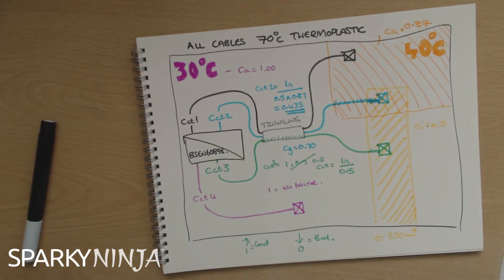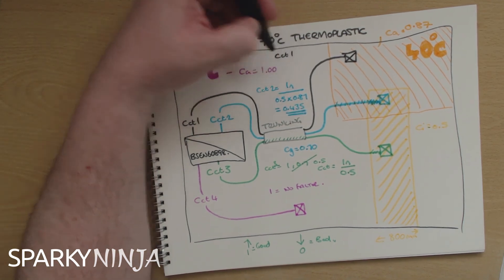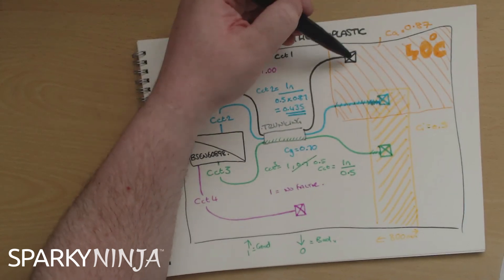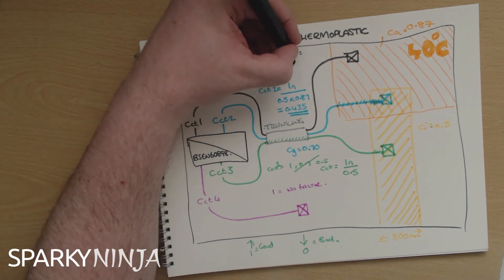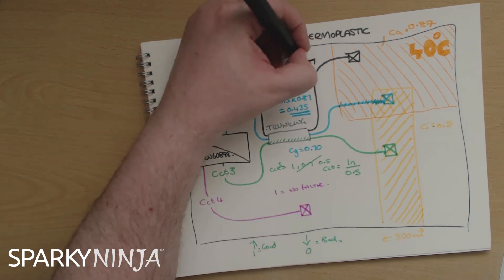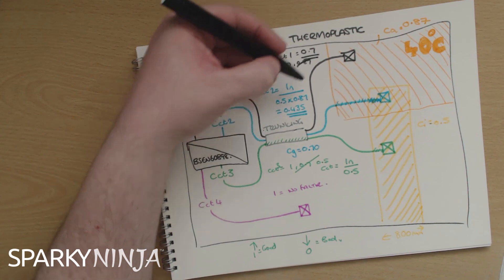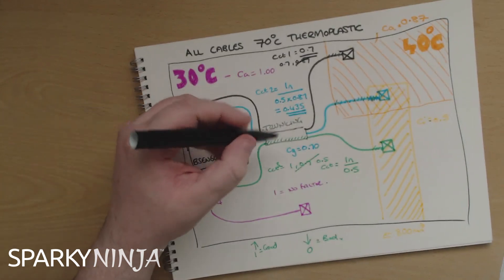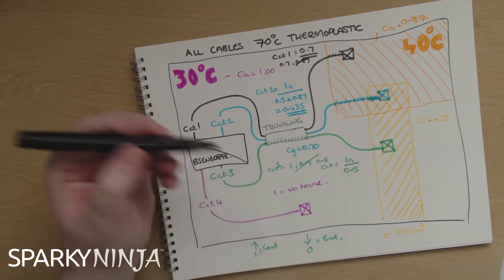For circuit one, I have the grouping factor of 0.7 and the temperature factor of 0.87. The cable in trunking is affected by grouping, and the cable connecting to equipment is in the higher ambient temperature — but these are separate sections, they don't coexist. So similar to circuit three, I pick the worst single factor, the one closest to zero: 0.7. Circuit one uses a factor of 0.7. Summary: circuit one uses 0.7, circuit two uses 0.435, circuit three uses 0.5, circuit four uses no factor.